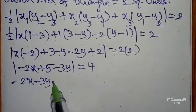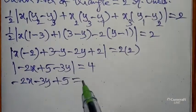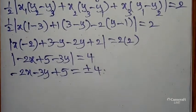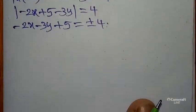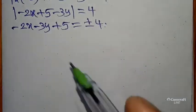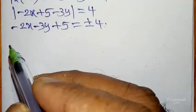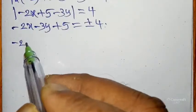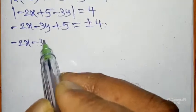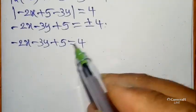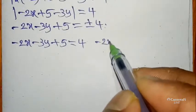We get -2x - 3y + 5 equals plus or minus 4. If you want to remove the modulus, you will get to the right side plus or minus. So next, for this value you can write it: -2x - 3y + 5 equals one time 4 and another time -4.